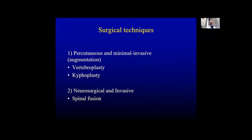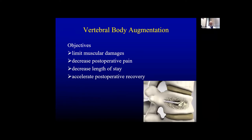Other than conservative, there are surgical techniques to treat vertebral compression fractures. The first is percutaneous and minimally invasive augmentation, including vertebroplasty and kyphoplasty. The second is neurosurgical and invasive technique, including spinal fusion. The objective of vertebral body augmentation is to limit muscular damage, decrease postoperative pain, decrease length of stay, and accelerate postoperative recovery compared to surgical procedures.